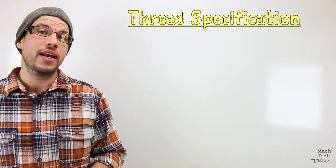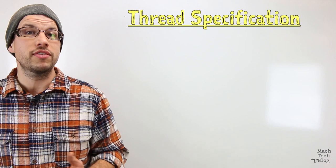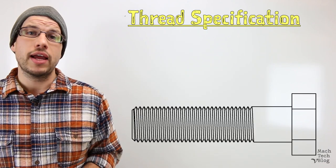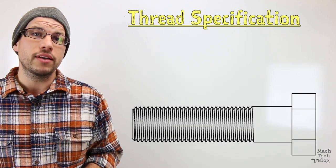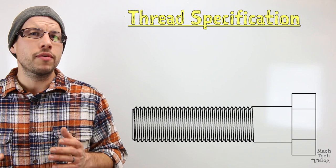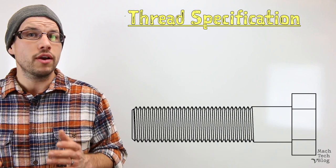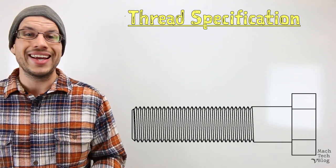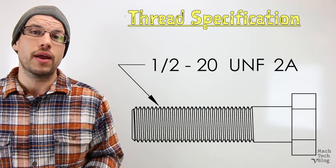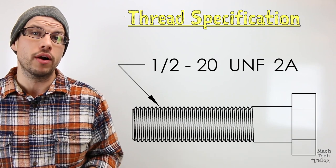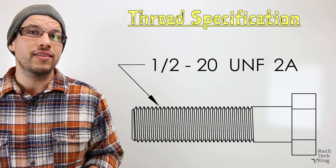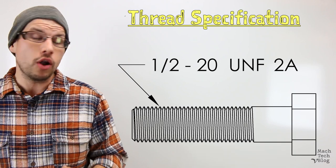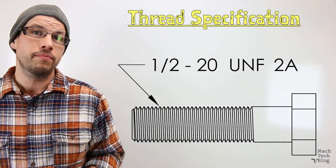If you look at an engineering drawing or a print of a simple threaded part, like a bolt, here's an example of what you're likely to see. All of the information required to manufacture the threads is specified in a note attached to the threaded portion of the part. The note usually contains at least four pieces of information, which always appear in the same order.